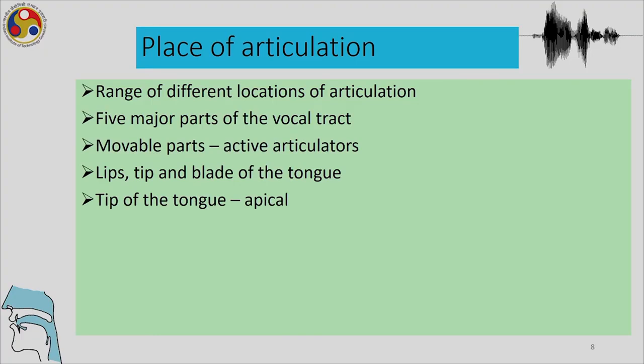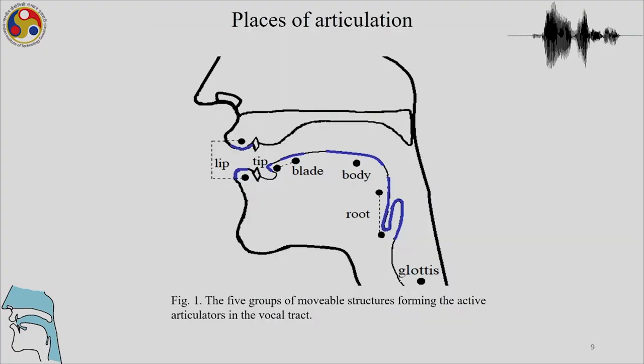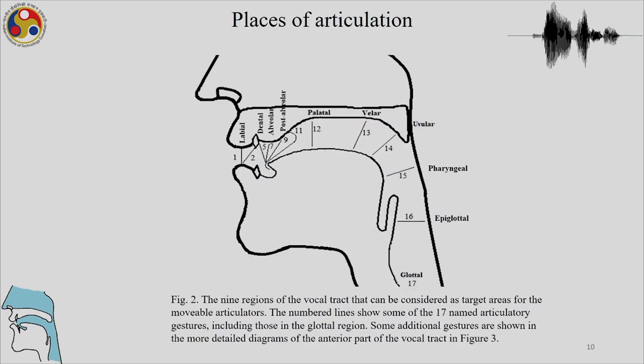We have seen the range of different locations of articulation and the movable parts. There are 17 regions, of which 9 are target areas — the ones that cannot move. The target areas include dental, alveolar, post-alveolar, palatal, and velar regions.